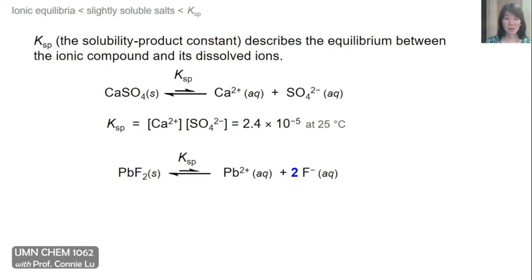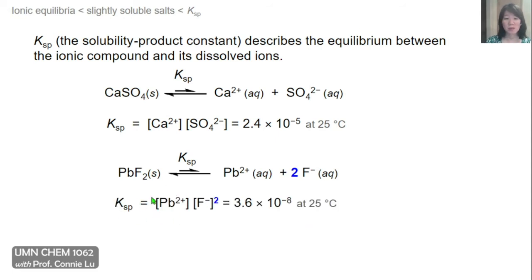In the second example, we have a salt, lead difluoride, that actually dissolves into three components. One of those components is the lead dication, and two of them are the fluoride anions. I really emphasize the 2, because that's important for the Ksp expression. We would write it as a product of the lead dication times the concentration of fluoride squared. Recall that this squared value directly comes from the coefficient in the balanced equation. This value of Ksp is also quite low at 3.6 times 10 to the minus 8 at room temperature.